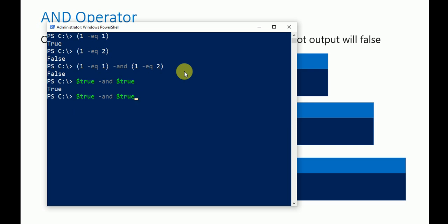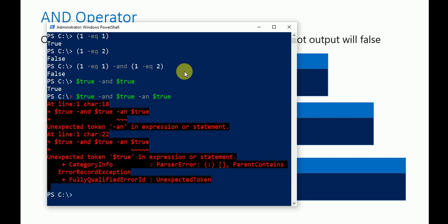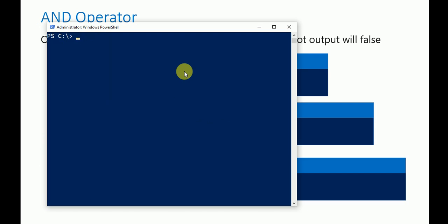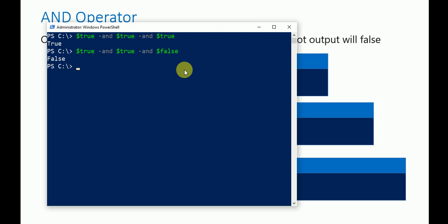Let's understand with this logic: true AND true, the output is true. Let's add one more statement — true AND true AND true — and the overall output is true. Now if we change the first to false, and two statements are true but the last statement is false, then the overall output is false. If a single value is false, the entire result will be false. If you need the result to be true, all statements should be true.